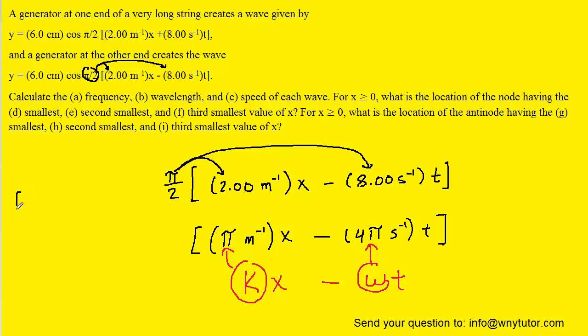So for part A, we can calculate the frequency, which is equal to ω divided by 2π. And since we know the value of ω is 4π, we can just plug in. And when we simplify that, we can see that the frequency is 2 cycles per second, or if we prefer, we could write that as 2 hertz. So that would be the correct answer to part A of the question.